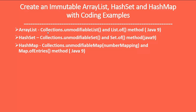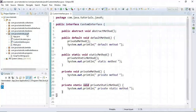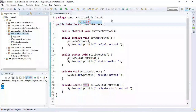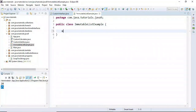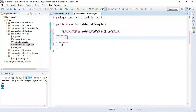Let's go ahead and see how to make our List, HashSet, and HashMap immutable with lots of coding examples. Let me switch to the Eclipse IDE and create examples to demonstrate this. I'm going to create a class and name it ImmutableListExample, and here I'm going to create a main method.